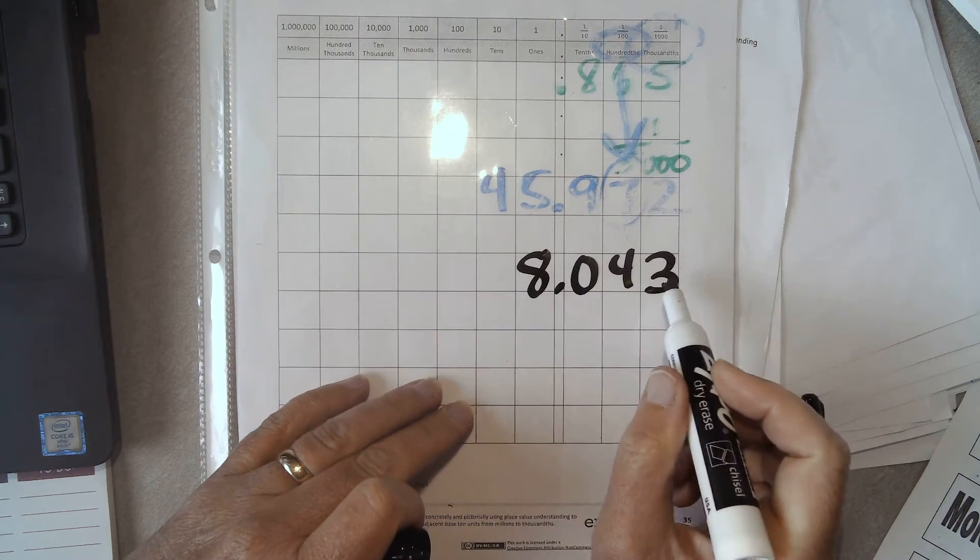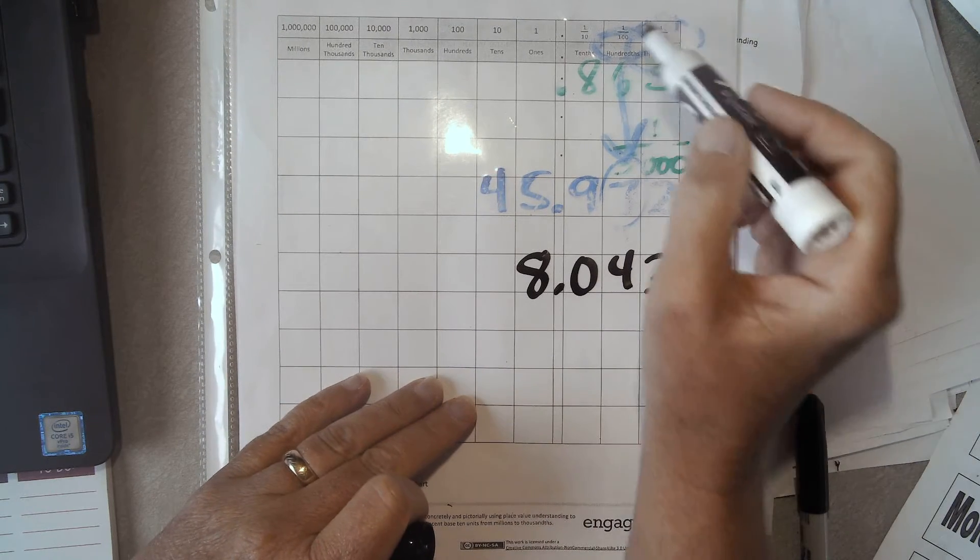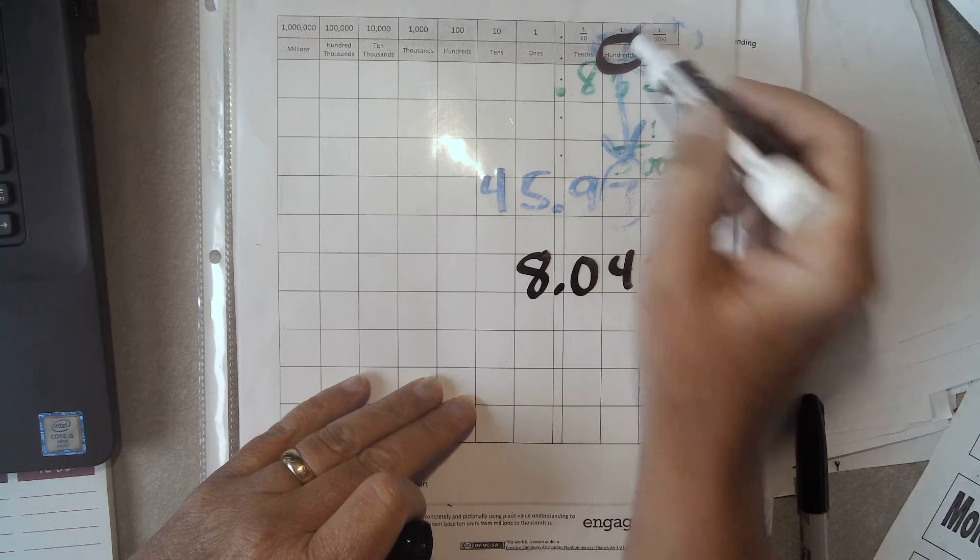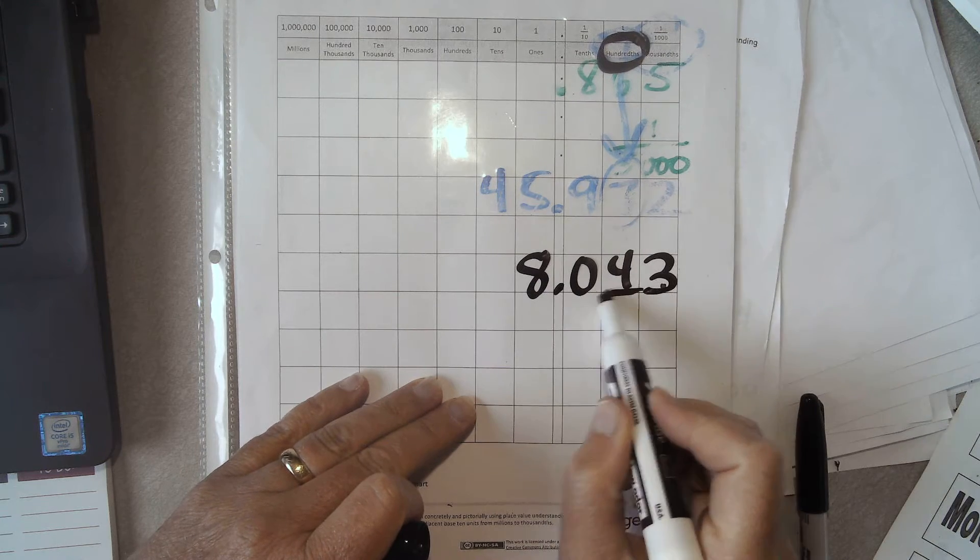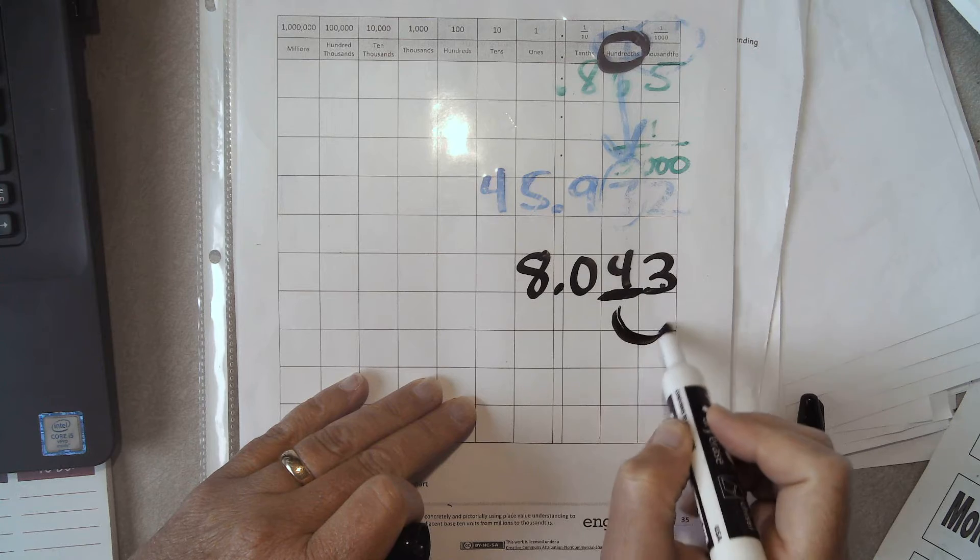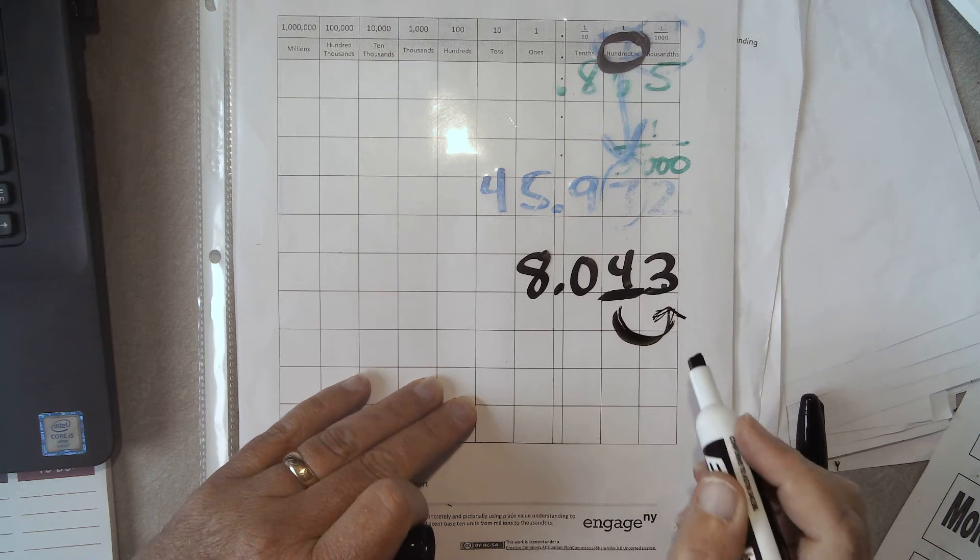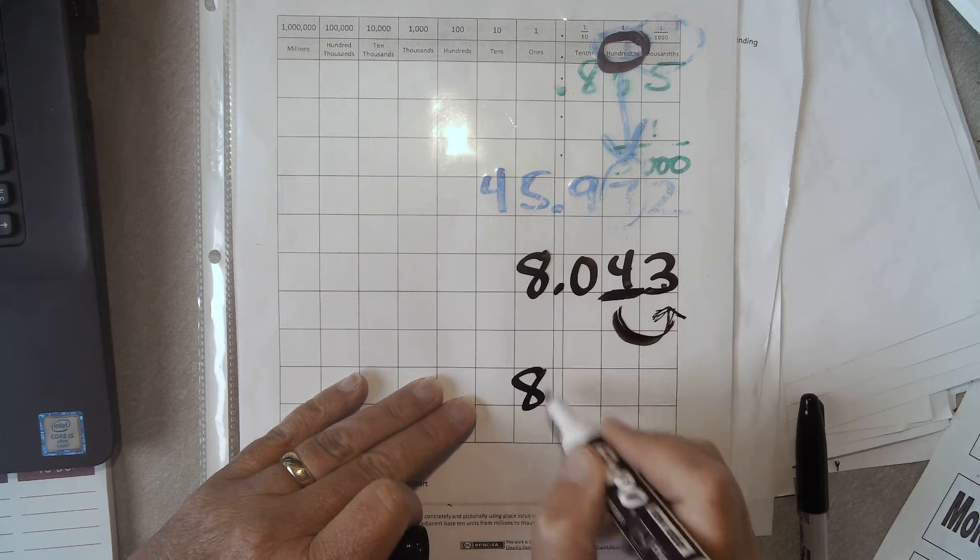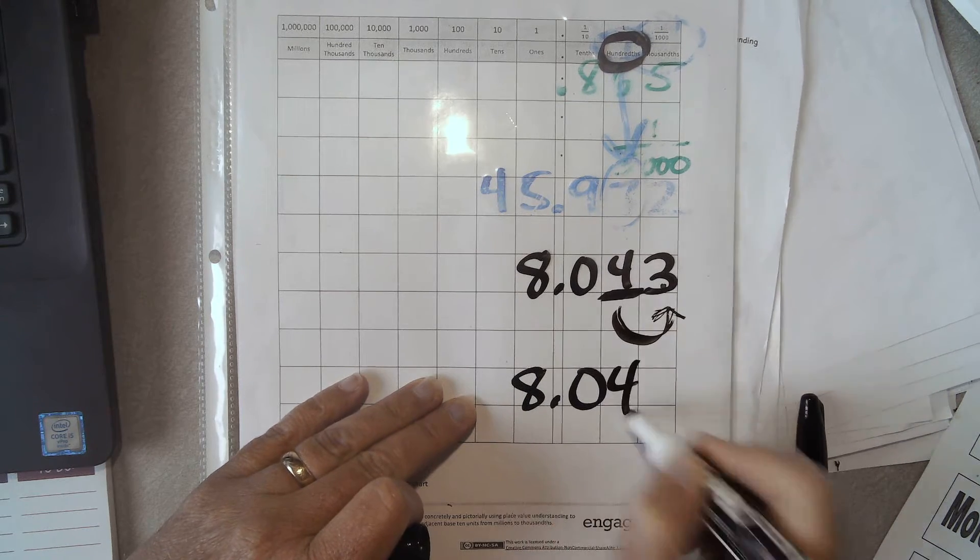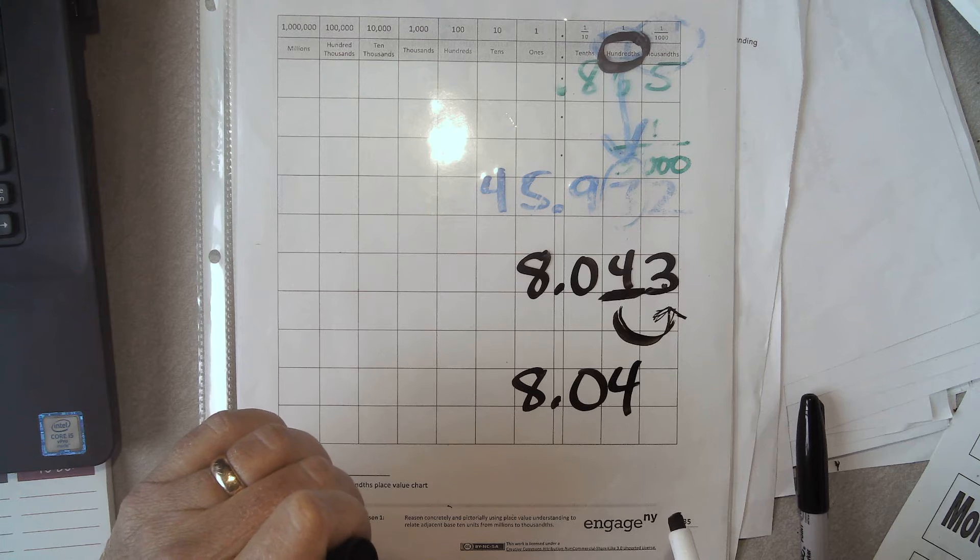8 and 43 thousandths. I'm supposed to round to the nearest hundredth, which is right here. So I'm looking at this number and the next door neighbor. And I ask myself, are you 5 or higher? No. So my answer is 8.04.